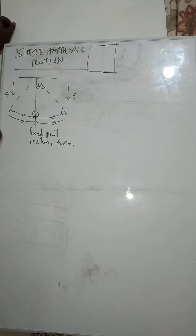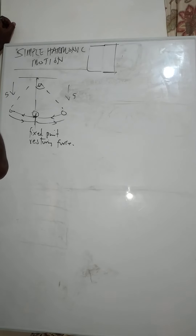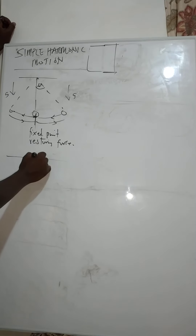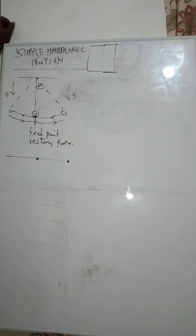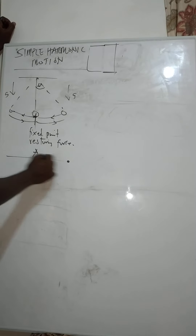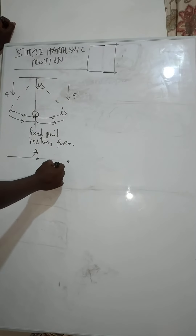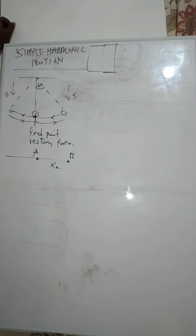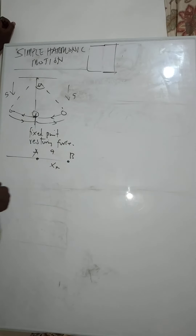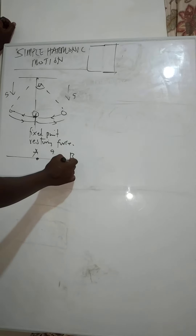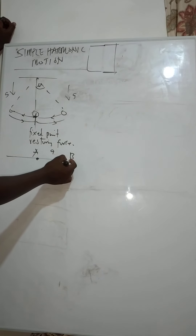Simple harmonic motion is the motion of an object from a fixed point to another point. If we have an object at point A that covers a distance x in meters and moves to point B, in moving from A to B it accelerates, using a certain acceleration before it covers the distance.